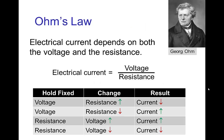This is summarized in Ohm's law, which says that the electrical current depends on both the voltage and the resistance. If we hold the voltage fixed and we increase the resistance, then we get more current.